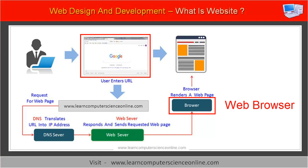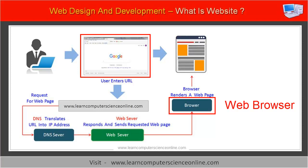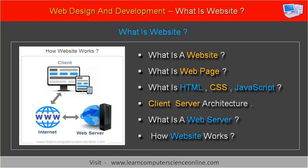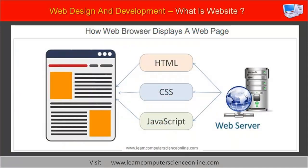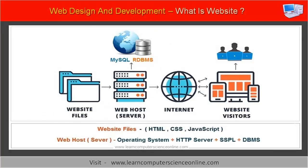The web browser then decodes these website files sent by the web server and displays the web page contents to the user. To quickly summarize what we have learned in this video: a website is a collection of web pages, each web page consists of HTML, CSS, and JavaScript code, and the website files are stored on the web server which provides various services on the internet.